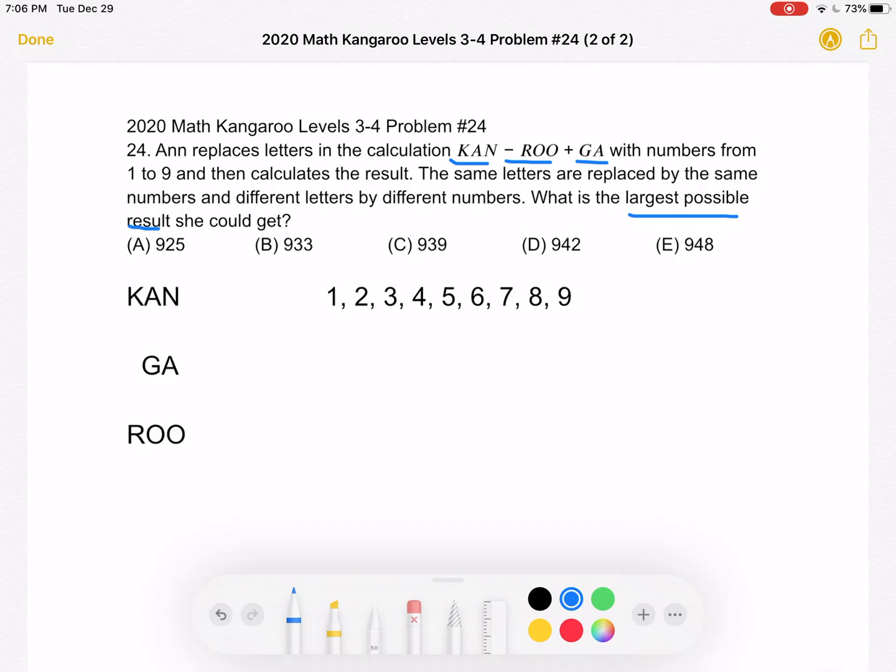We want to find the largest possible result that Ann can get. So if we want the largest possible result, then we want this number, ROO, that we're subtracting to be the smallest number possible.